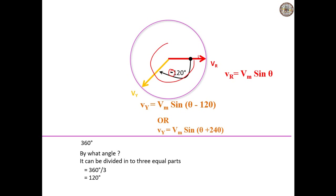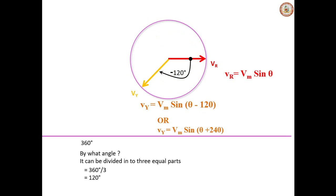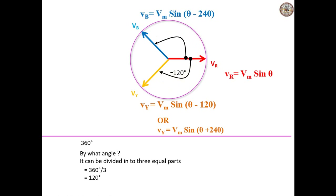As you rotate the vectors in clockwise direction, it is negative; as you rotate the vectors in anticlockwise direction, it is positive. Thus, the third voltage V_B is equal to V_M sin(ωt − 240°).